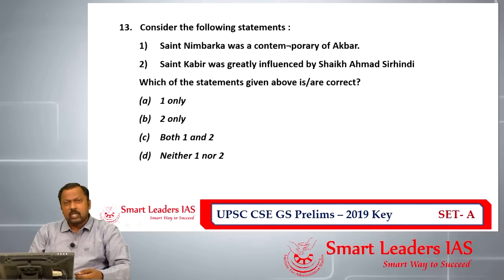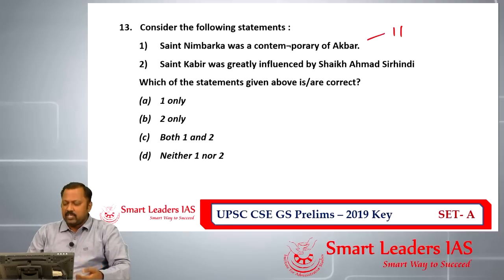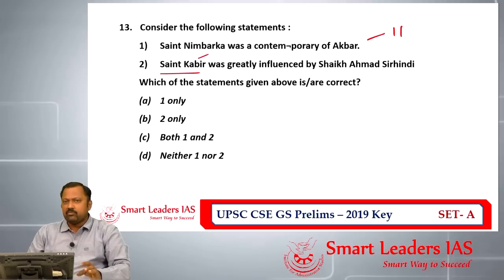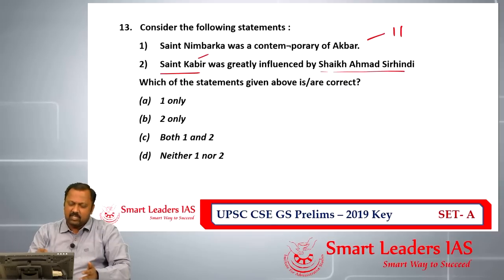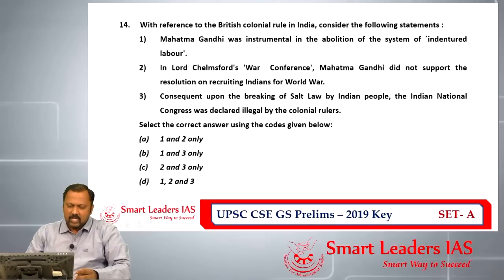Question number thirteen asks about Bhakti saints. The first statement — that Saint Nimbarka was a contemporary of Akbar — is incorrect, as Nimbarka was an 11th-century saint. The second statement — that Saint Kabir was greatly influenced by Sheikh Ahmad Sirhindi — is also incorrect, since Kabir lived around the 1450s and Sheikh Ahmad Sirhindi around the 1560s, making it chronologically impossible. The answer for question number thirteen is neither one nor two.